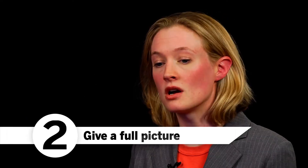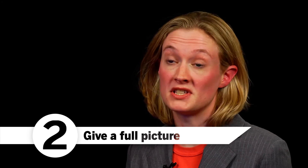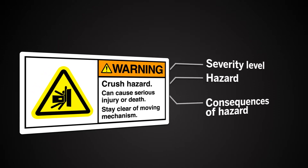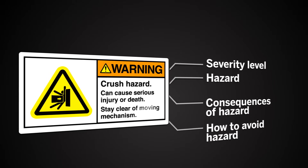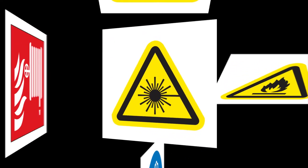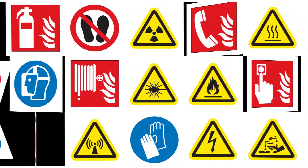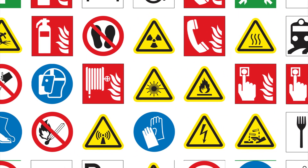You want to talk about the potential hazard and the consequences of not avoiding that hazard, and perhaps give some methods on how to avoid that hazard. Symbols can often be very important, especially if you have an application where there are multiple languages being spoken or an international application — and that can often add clarity to your particular warning labels.